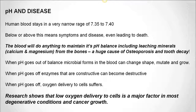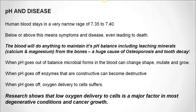pH imbalance also affects the absorption of minerals. If our pH is out of balance, we become mineral deficient, leading to other imbalances. Our digestive system and what we feed our body impacts our pH and determines whether we have dynamically good health or imbalance and disease. Human blood stays in a very narrow range of 7.35 to 7.40. Below or above this means symptoms and disease, even leading to death. The blood will do anything to maintain its pH balance, including leaching minerals — usually calcium and magnesium from the bones — which is a huge cause of osteoporosis and tooth decay.